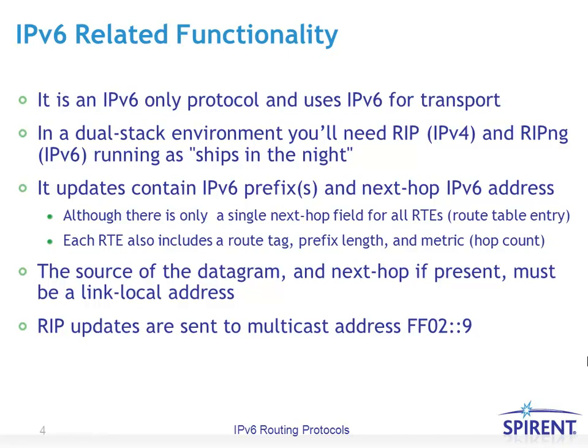RIP-NG is an IPv6-only protocol and uses IPv6-only for its transport. So if you're running in a dual-stack environment, you'll be running RIP for IPv4 and RIP-NG for IPv6 as separate processes, often referred to as running as ships in the night. Its updates contain IPv6 prefixes and a single NextHop IPv6 address. Each route table entry includes a route tag, prefix length, and metric, which is a hop count. The source of the datagram and NextHop, if present, must be a link-local address, which implies that RIP updates are not propagated farther than routers on the local link.